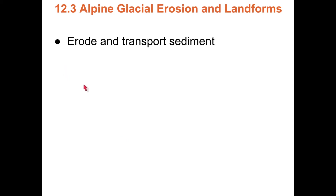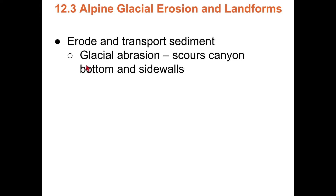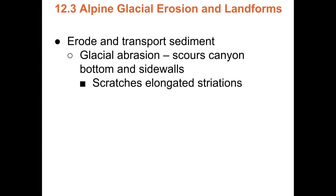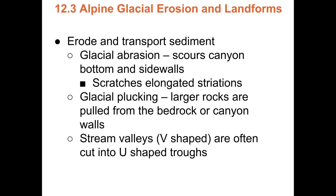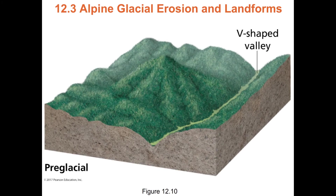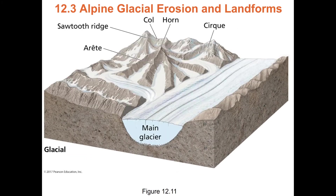Glaciers erode and transport sediment. There's glacial abrasion — as glaciers move they scour, scratch, and remove material. There's also glacial plucking. The most important thing: stream-cut valleys are V-shaped, but once a glacier flows down a V-shaped valley, it erodes material and creates a U-shaped valley. Pre-glacial: V-shaped. Post-glacial: U-shaped. That is the biggest, most important indicator.